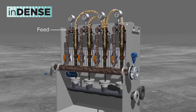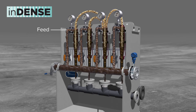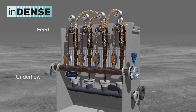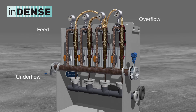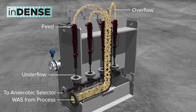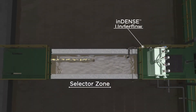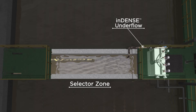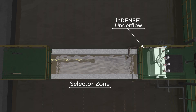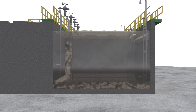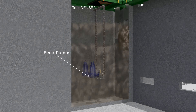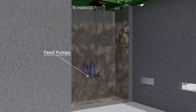All BioCoast systems are designed to include the Indense Gravimetric selection technology. The World Water Works Indense process is designed to promote the selection and retention of denser biomass, allowing the BioCoast process to be augmented with improved settling, enhanced biological phosphorus removal, and improved throughput. The wasting process occurs following an RAS phase. The selector tank has a baffle wall allowing for concentrated MLSS, and Indense feed pumps are located in this compartment to feed the Indense process.